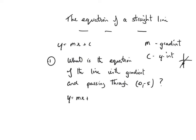So two things that we need are the gradient and the y-intercept. We know that the gradient is 2, and we know that the y-intercept is −5. If we pass through the point (0, −5), that means it's 0 along and 5 down — so we pass through −5 on the y-axis. The gradient is 2, so that's y equals 2x. The y-intercept is −5, so the final answer is y equals 2x minus 5.